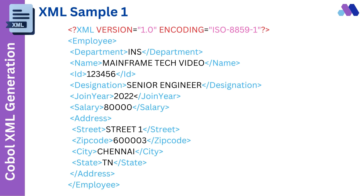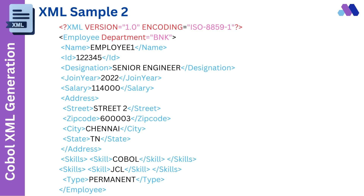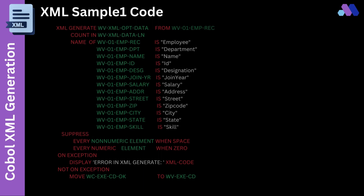Here is a sample XML — let us note it as Sample 1 for the rest of the video. We will generate this XML structure through a COBOL program later in this video. Also take a look at this XML sample, which we will note as Sample 2. Note that it has an attribute and repeating elements.